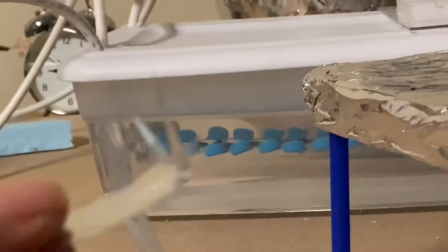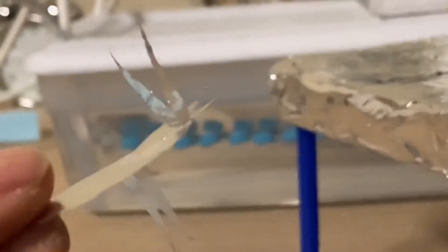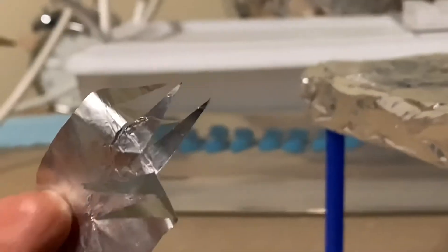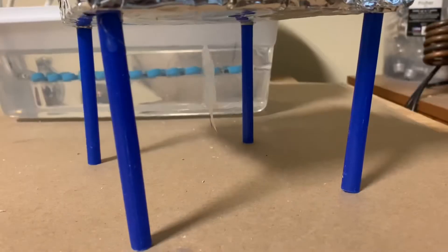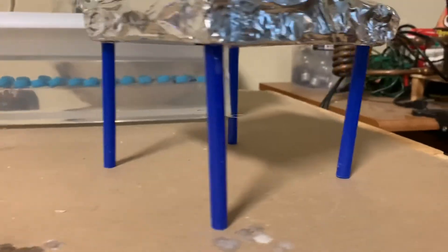This is kind of how it looks. I just cut a piece of aluminum foil and then bent the little spikes on the bottom, and this seems to work really well. Ionic wind blows off the spikes.